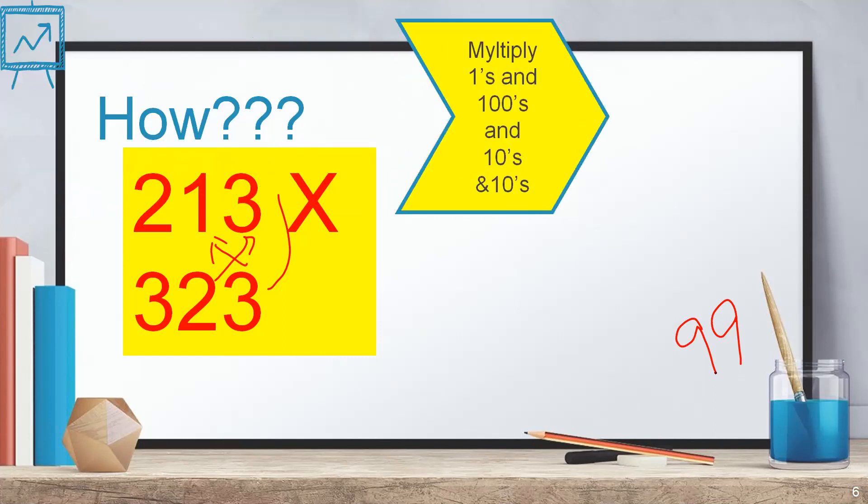Then multiply it and add 1s and 100s and 10s and 10s. Means 1s and 100s is 2 times 3 is 6. 3 times 3 is 9. 6 plus 9 is 15. And then 10s and 10s means 1 into 2. 1 into 2 is 2. So you have 9 plus 6, it is 15. 15 plus 2 is 17. When you write 17, it is a two-digit number. Right? Write 7 here and 1 as a carry.